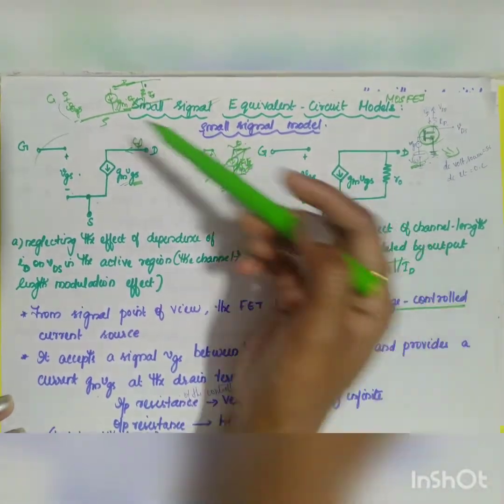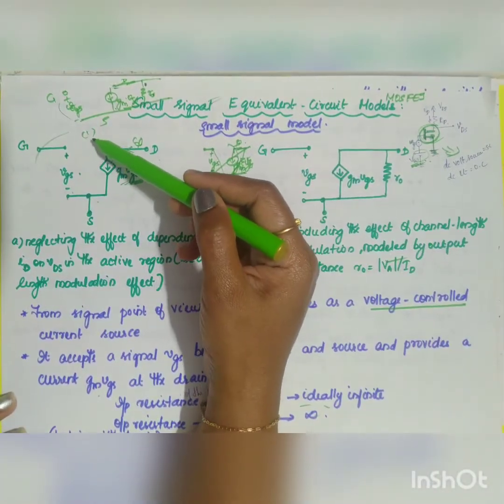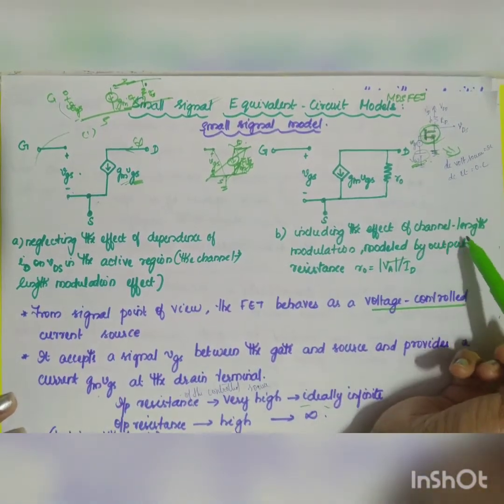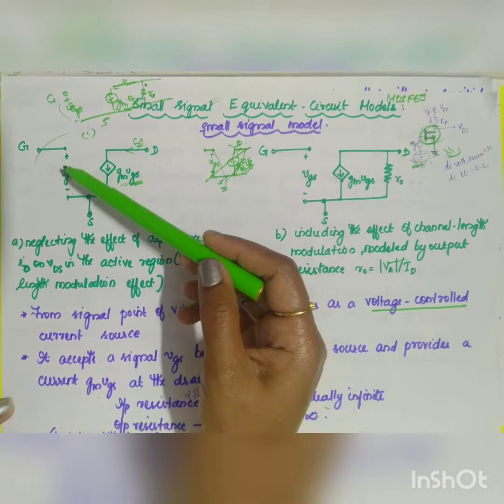This is split into two different cases. Case 1, you are neglecting the value of your channel length modulation. Case 2, you are including your channel length modulation, that is what is given in your diagram.